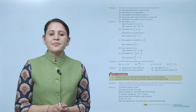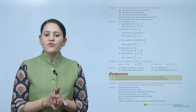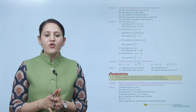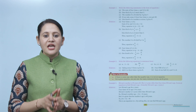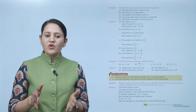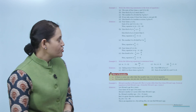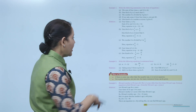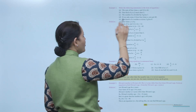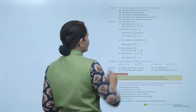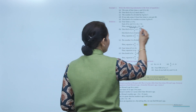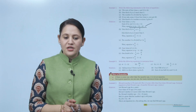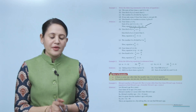Now we will take an example: write the following statement in the form of an equation. First: the sum of 4 times y and 12 is 42. So, 4 times y is 4y, and the sum with 12 means 4y plus 12 equals 42. So our equation is 4y plus 12 equals 42.